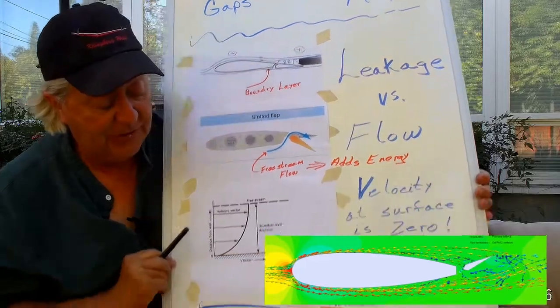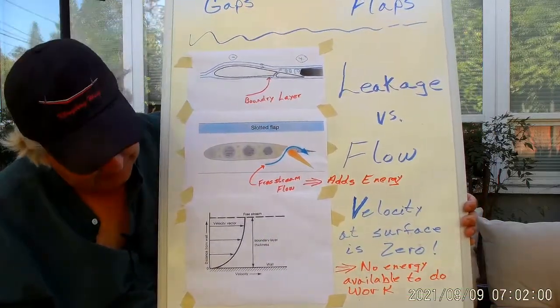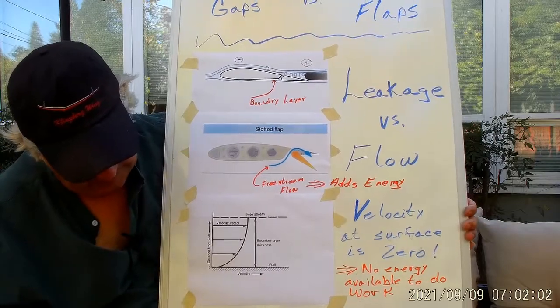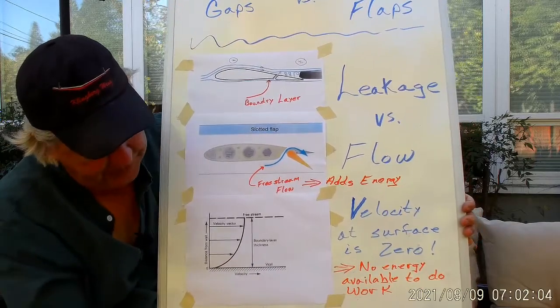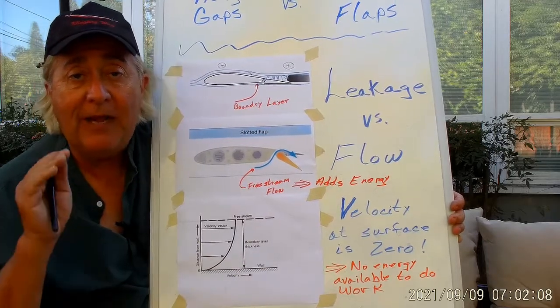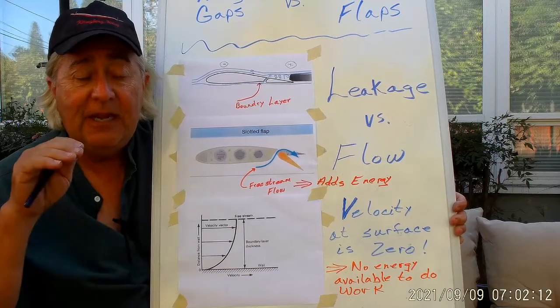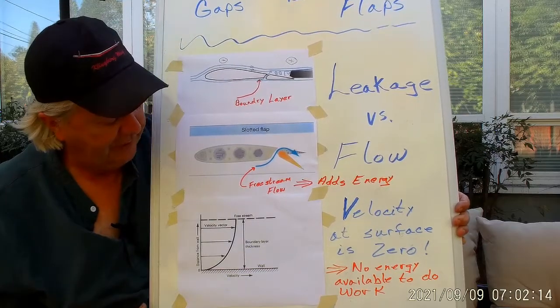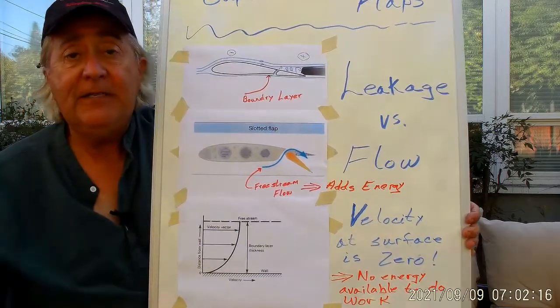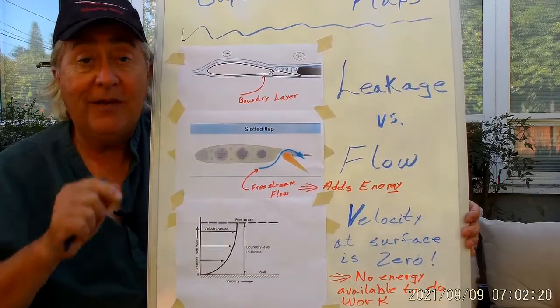So by sealing that gap, it would keep the flow attached much longer and get the controls back to something useful. So remember, leakage promotes flow separation. Free stream flow will add energy to the system and help keep the flow attached and provide more lift from the airflow. So there we go. Easy peasy. Pretty simple problem. And explained without any equations.